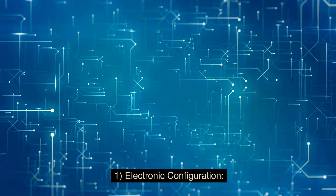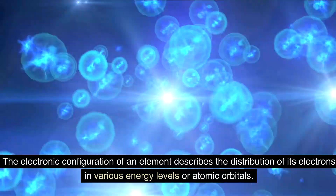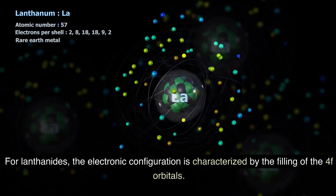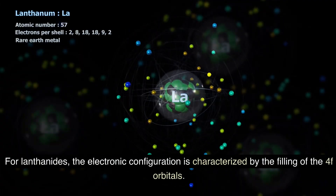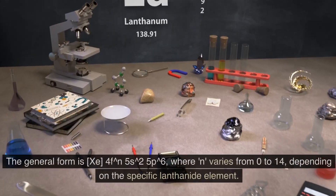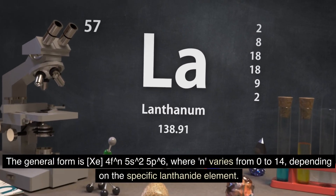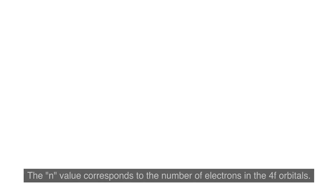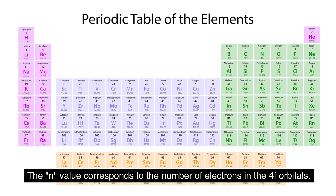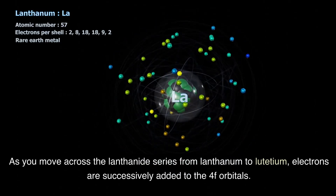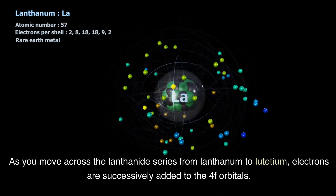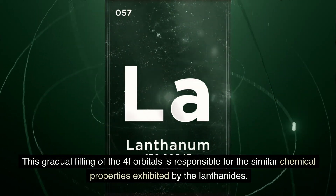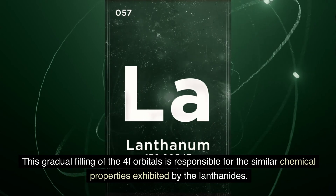Electronic configuration. The electronic configuration of an element describes the distribution of its electrons in various energy levels or atomic orbitals. For lanthanides, the electronic configuration is characterized by the filling of the 4F orbitals. The general form is [Xe] 4f(n) 5d(0-1) 6s2, where n varies from 0 to 14 depending on the specific lanthanide element. The n-value corresponds to the number of electrons in the 4F orbitals. As you move across the lanthanide series from lanthanum to lutetium, electrons are successively added to the 4F orbitals. This gradual filling of the 4F orbitals is responsible for the similar chemical properties exhibited by the lanthanides.